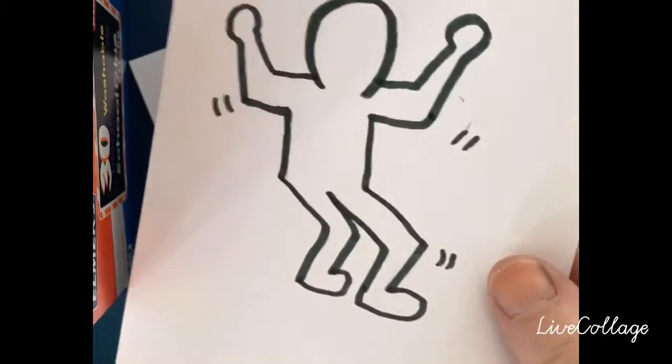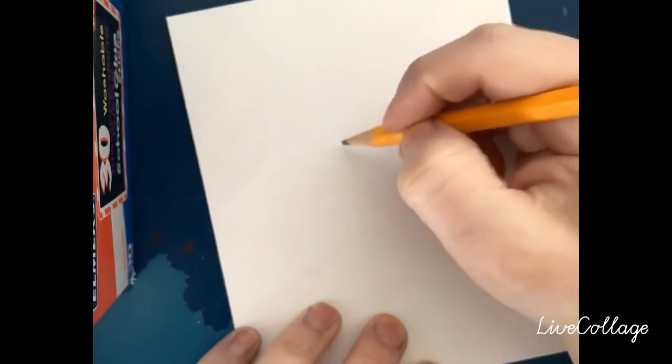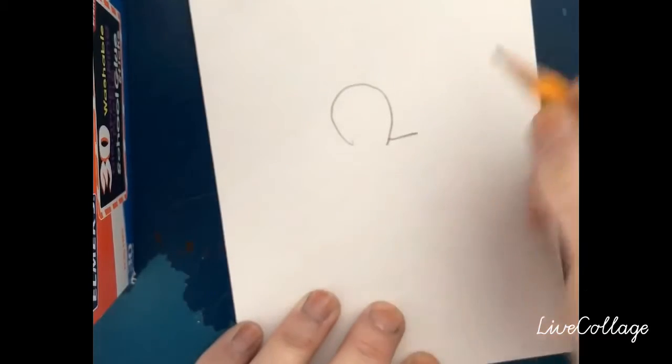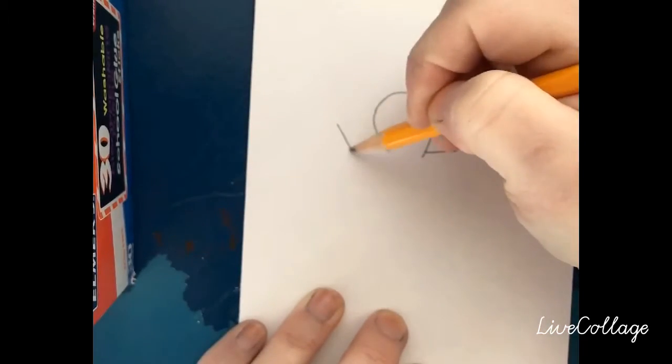So your challenge of the day is to make some Keith Herring drawings and do some moving. To do a Keith Herring drawing, we're just going to make simple sort of stick people. Very simple drawing. We're gonna start with the head, then we're gonna add some arms and they can be moving in any direction you want.